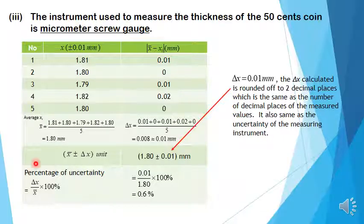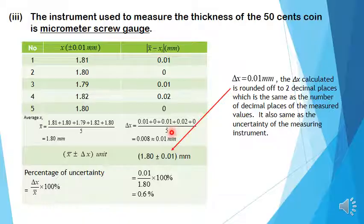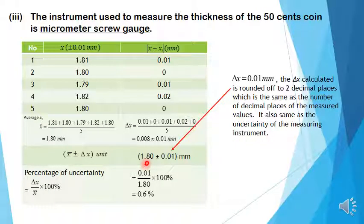Roman 3. State the instrument used to measure the thickness of the 50 cents coin, which is the micrometer screw gauge. Then calculate for the average thickness, which is 1.80 mm. Complete this column by calculating the modulus difference between the average thickness and each measurement reading recorded. Sum up all these values and divide by 5 to get the uncertainty, which is 0.008 mm. The delta x calculated is rounded off to two decimal places, the same as the number of decimal places of the measured values, and also the same as the uncertainty of the measuring instrument. Therefore, the thickness of the coin is recorded as 1.80 ± 0.01 mm.